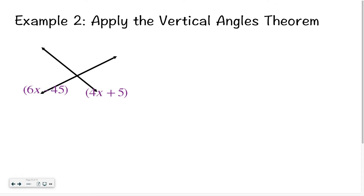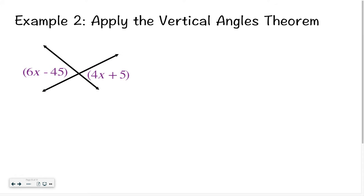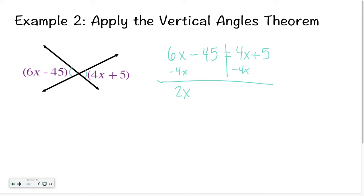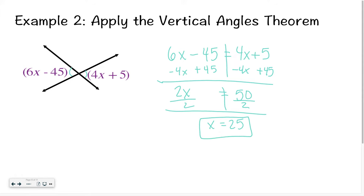Now let's talk about using the vertical angles theorem to solve for different things. If two angles are vertical and congruent, that means they are equal. So if I want to solve for x, all I have to do is set them equal to each other. I subtract 4x, giving me 2x, then add 45, giving 2x equals 50. Dividing by 2, I get x equals 25. That's how you would solve that problem.